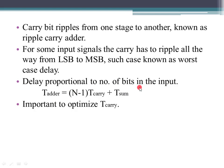The delay is always proportional to the number of bits in the input. The total time is equal to (N minus 1) multiplied by T_carry, plus T_sum. T_sum means sum generation time, T_carry means carry propagation time, and N is the total number of bits.